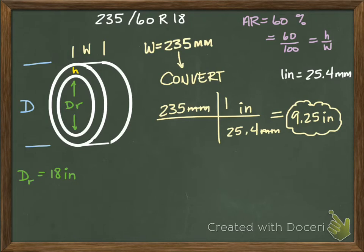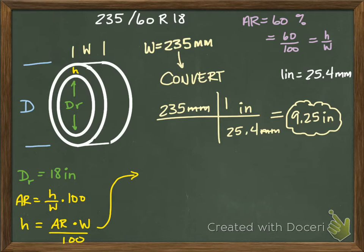My height—we said the aspect ratio is height over width. So I'm gonna write this down here. So AR equals height over width times 100 to put it into percent form. So if I move things around to get my height by itself, I get height equals AR times W over 100. I did that step by step in the last video, so I'm not doing that here. If I plug everything in, I'm going to use my width in inches, not the millimeter one. So I get my height equals 60 times 9.25 and I'm going to divide that by 100. So my height then is 60 times 9.25 divided by 100. I get 5.55 inches.